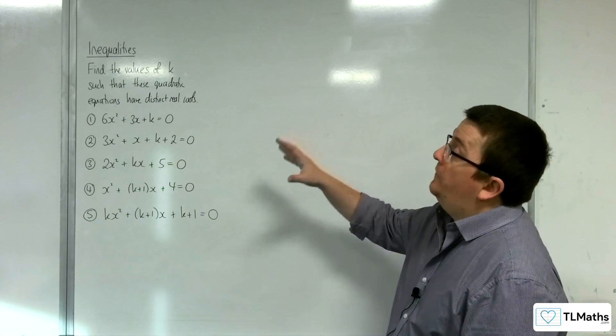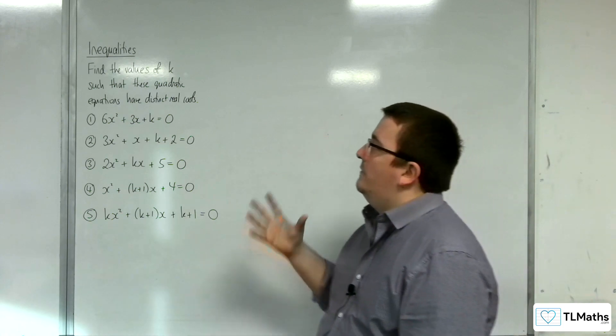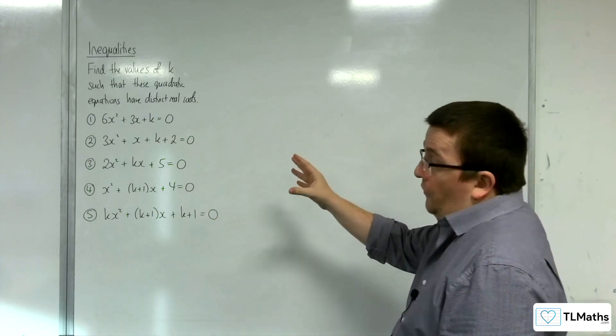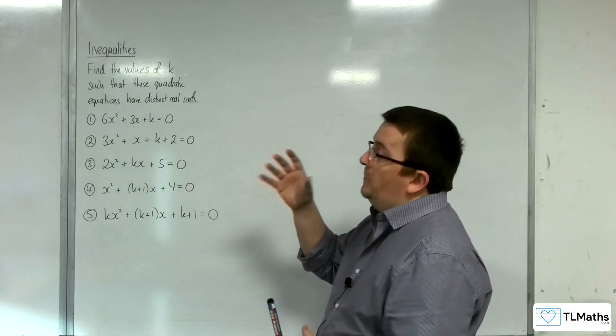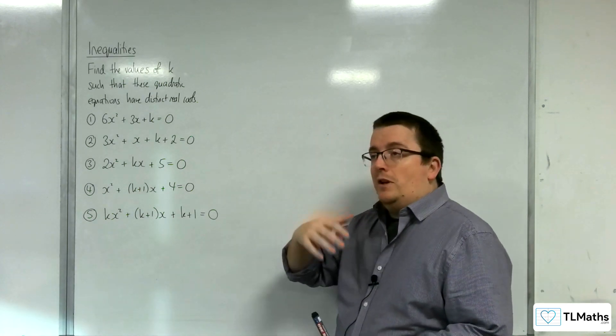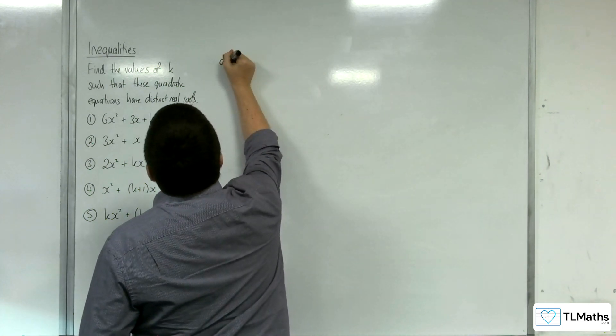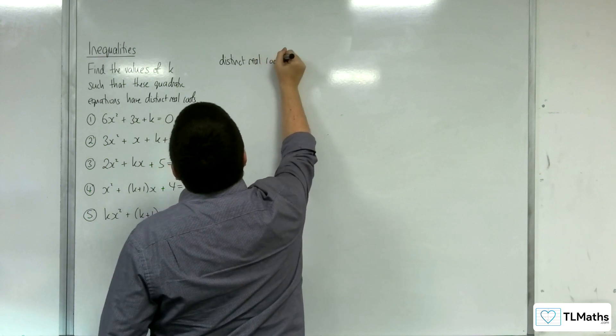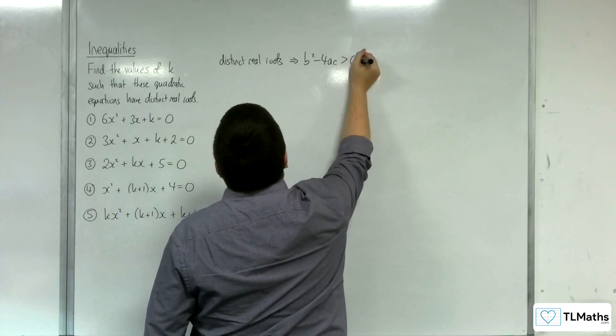In this video, I want to find the values of k such that these quadratic equations all have distinct real roots. In order for that to be the case, the discriminant must be greater than 0. You want to make that very clear when you're answering this question. Distinct real roots implies that the discriminant of the quadratic would have to be positive.